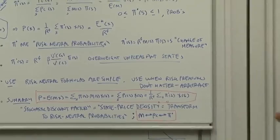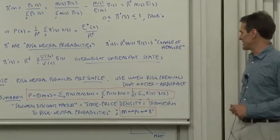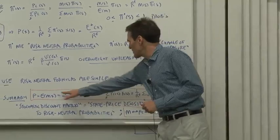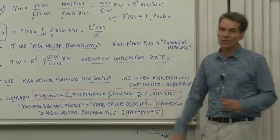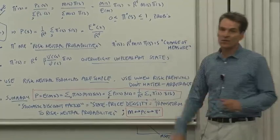The stochastic discount factor is the same thing as a state price density. It's the same thing as a transformation to risk neutral probabilities. So you've learned how to express the same idea in three different ways, three different very intuitive concepts, and you know how to transform from one to the other. Given a discount factor, you can find contingent claims, you can find risk neutral probabilities, and express the problem you have whichever way makes the most sense to you.